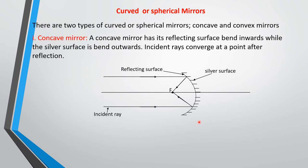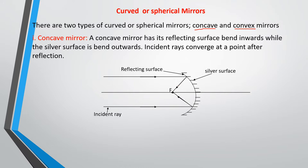Curved or spherical mirrors — there are two types. We have the concave mirror and the convex mirror. For the concave mirror, the reflecting surface is bent inward while the silver surface is outward. All incident rays on a concave mirror converge after reflection at a point, as shown in this ray diagram.